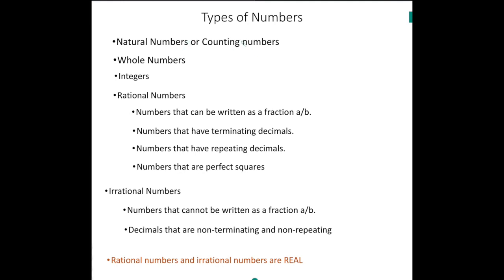Natural numbers, or what we refer to as counting numbers, include 1, 2, 3, and so forth. They are referred to as counting numbers because if I gave you a box of pencils to count, you would start with 1.